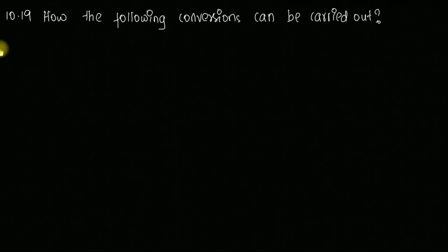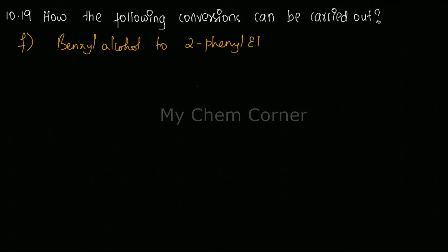Next is question number 10.19, the sixth conversion which is benzyl alcohol to 2-phenyl ethanoic acid. The product looks a little complicated, so let's try to draw the structure.